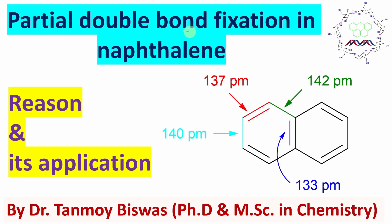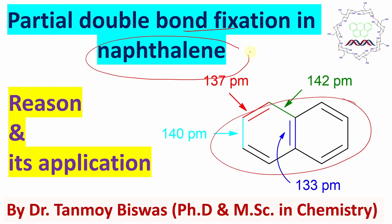You can see partial double bond fixation in naphthalene. Naphthalene is actually an aromatic nucleus, so it is a delocalized system. I am talking about bond fixation, which means localization. This unique property we are going to discuss today, and today's topic will cover mainly the reason of this property as well as application in synthetic organic chemistry.